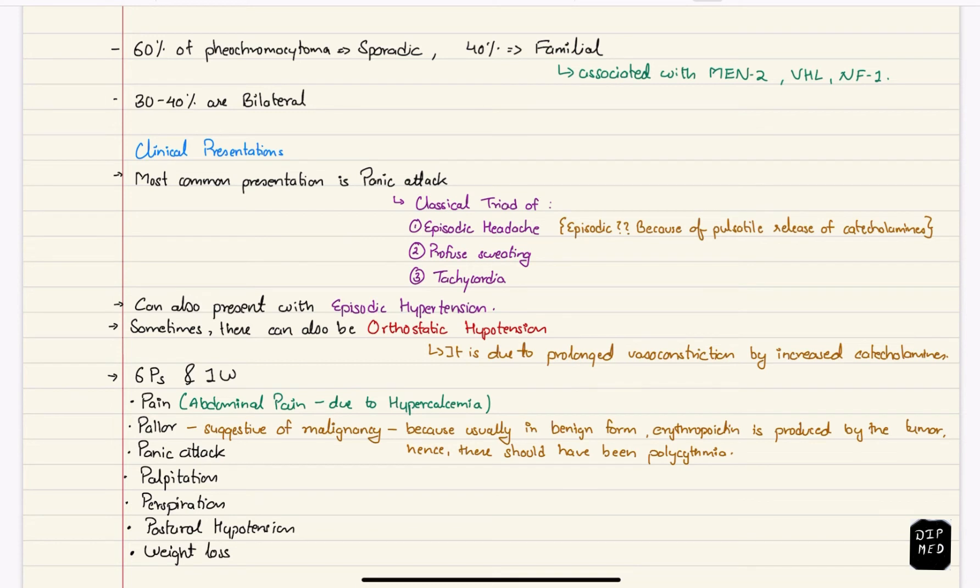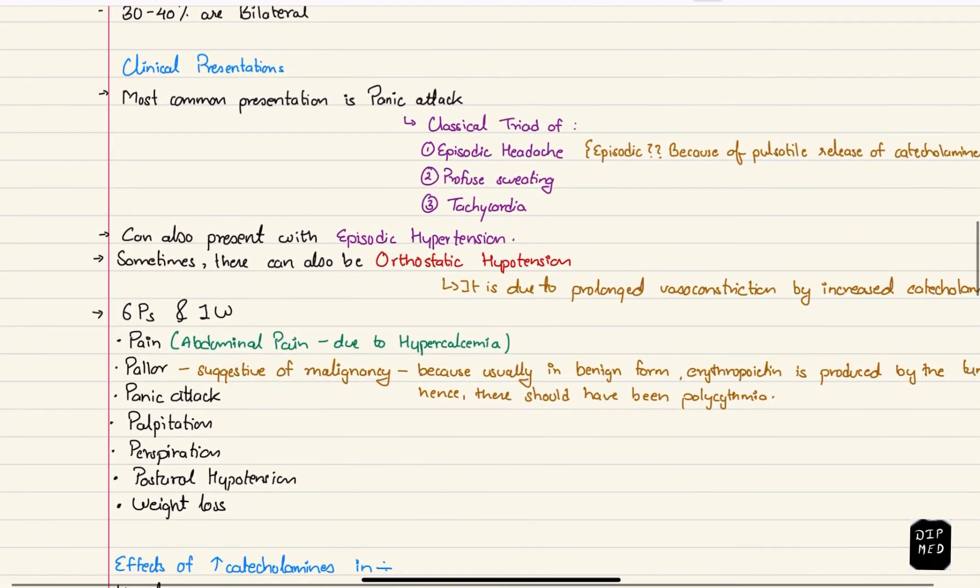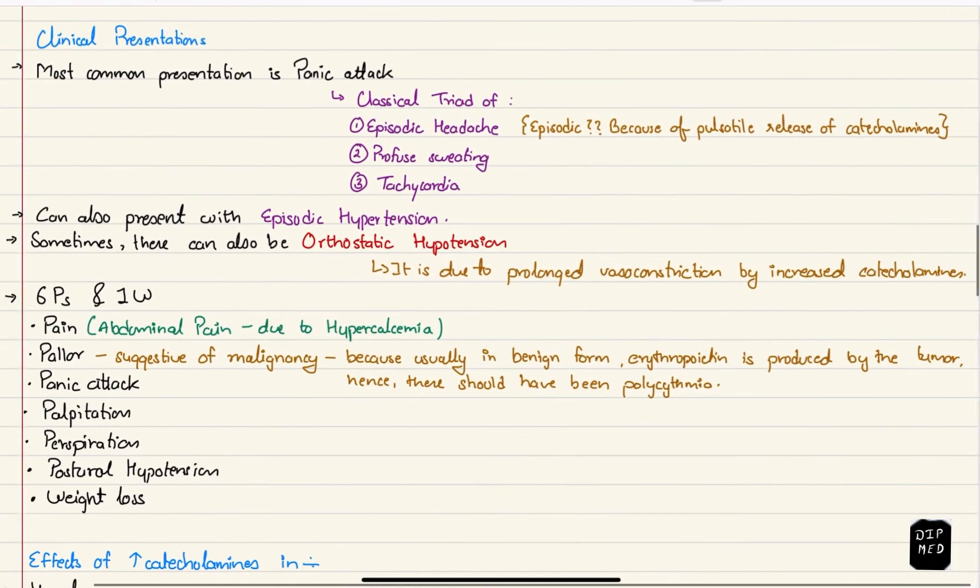Now on the clinical presentations. Most common presentation is panic attack. It is characterized by classical triad of episodic headache, profuse sweating and tachycardia. These symptoms are produced due to increased amount of catecholamines by the tumor. And the tumor produces catecholamines in a pulsatile manner hence the symptoms are episodic. Patient might also present with episodic hypertension which is due to vasoconstricting action of catecholamines. Or sometimes there can also be orthostatic hypotension which might be due to prolonged vasoconstriction.